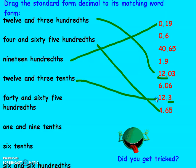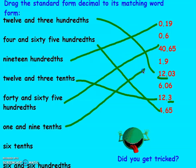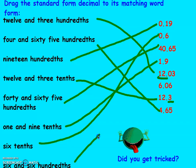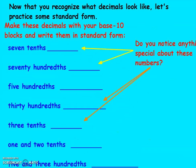Forty and sixty-five hundredths — forty is the whole, sixty-five hundredths. One and nine tenths — one and nine in the tenths place. Six tenths — no whole, so zero and six tenths. Six and six hundredths — six whole and six hundredths. Did you get tricked? Now match these decimals with the base-ten blocks so you can draw them out and write your decimal form.